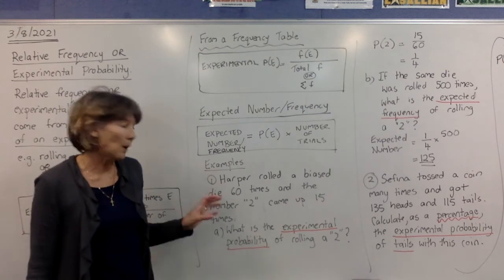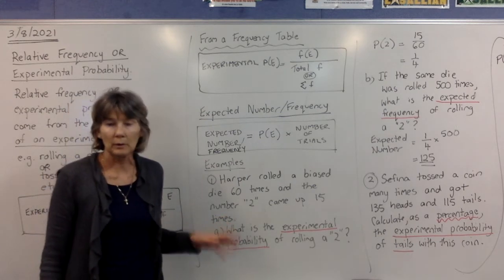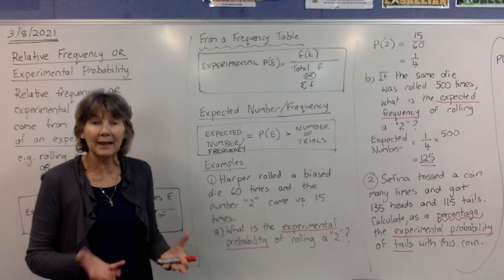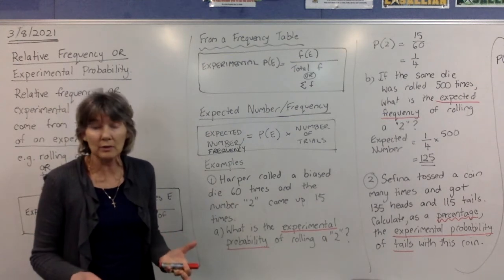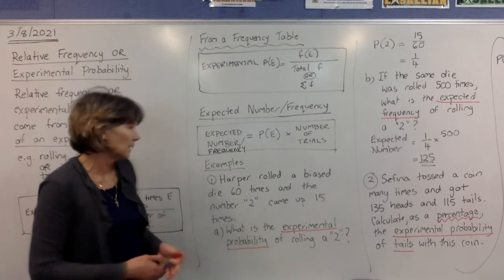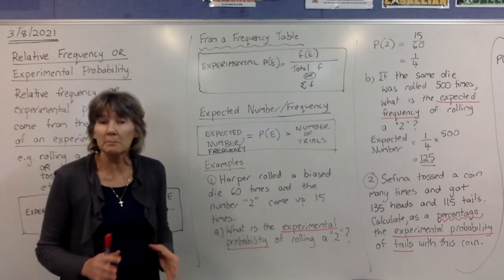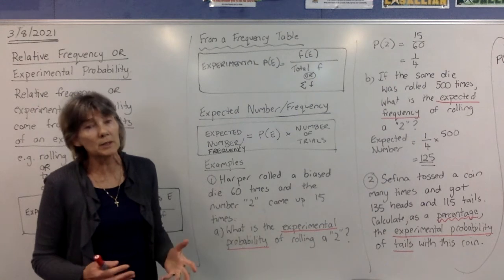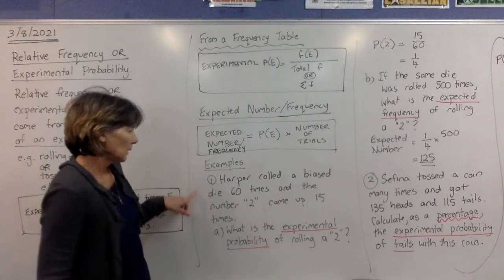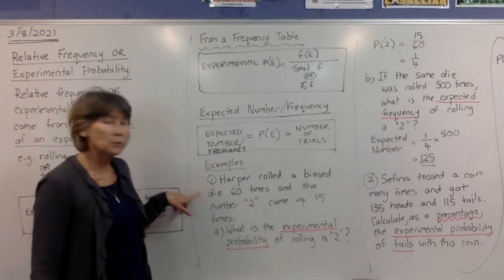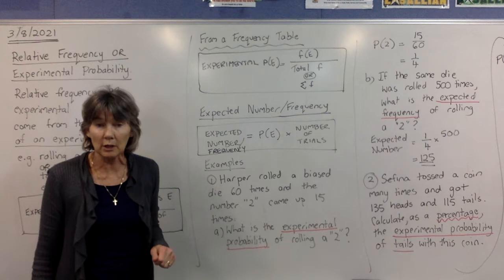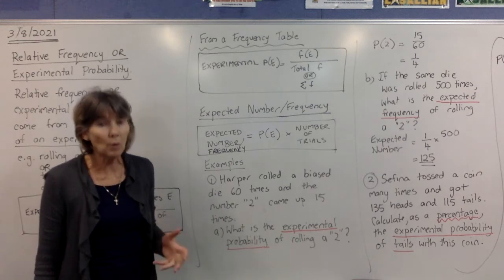We've got Harper rolled a biased die. Most dice are not biased, they're unbiased, you roll them and they can land evenly on any of the six surfaces. So each number has an equal chance of occurring. But if the die is biased, it means it's weighted a little bit towards one side, and it's more likely to come up on certain numbers. So on this biased die that was rolled 60 times, the number 2 came up 15 times. That's probably more than you would expect.